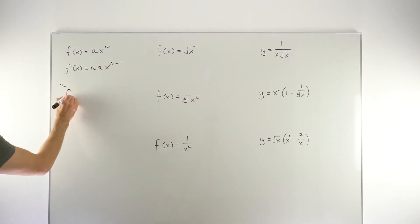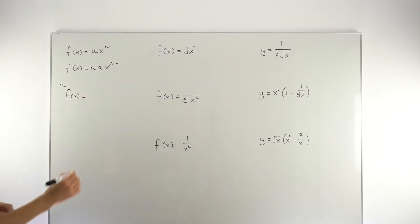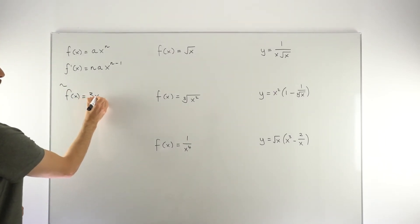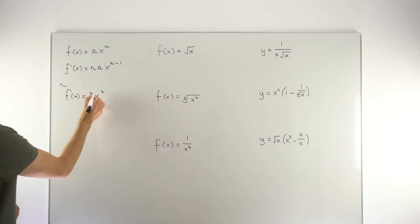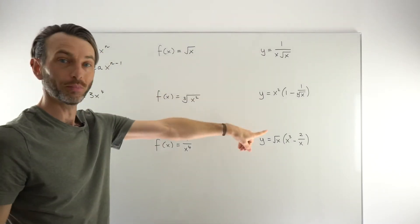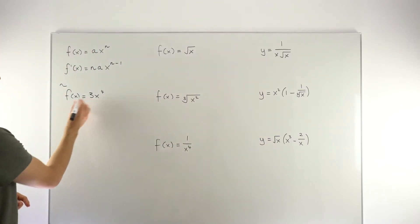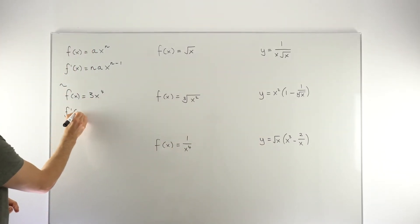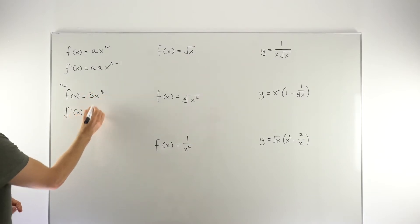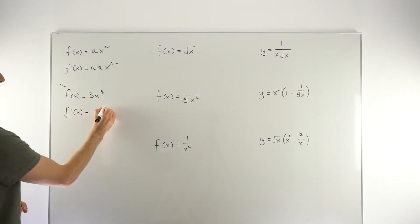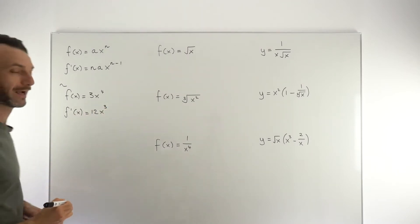To take an actual example in the ideal format, let's say we want to differentiate 3X to the power of four. It's in the correct format, so we just go ahead and use the rule: multiply by the power, so 3 times 4 is 12, take one off the power, and we end up with 12X cubed.